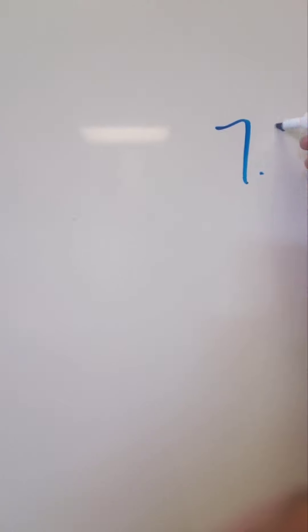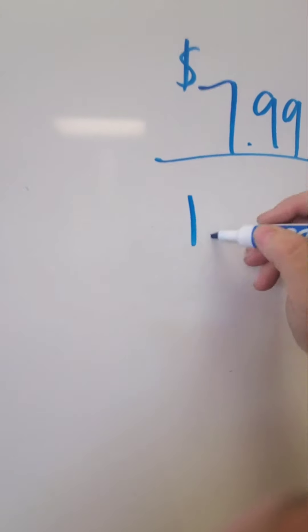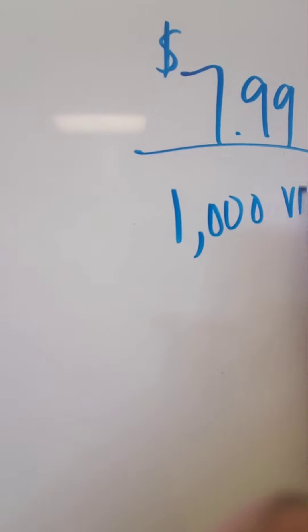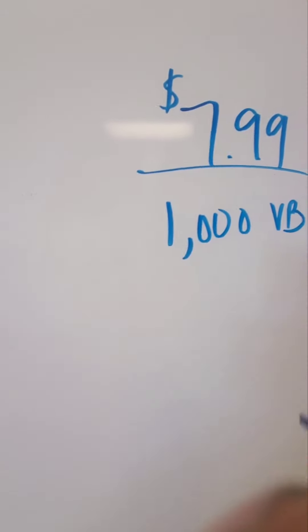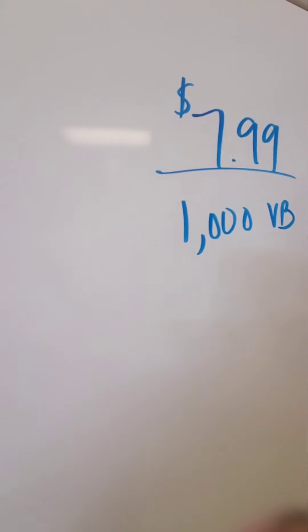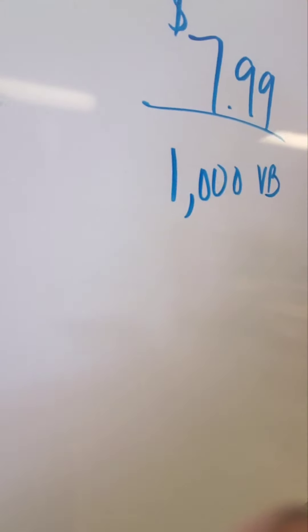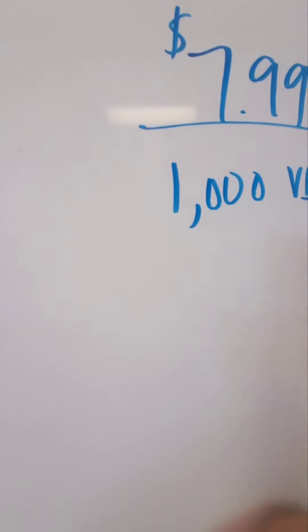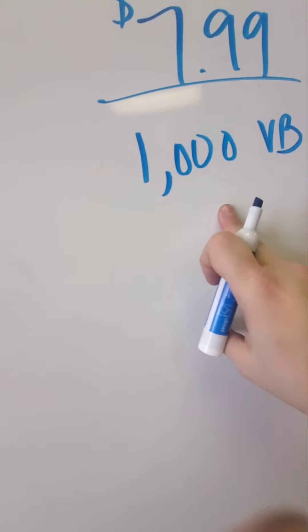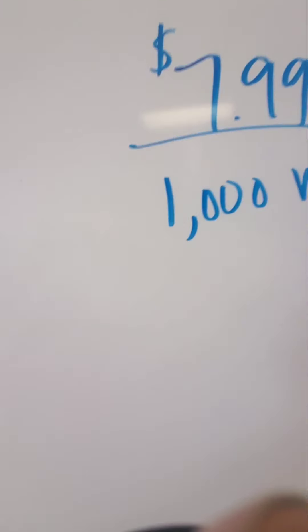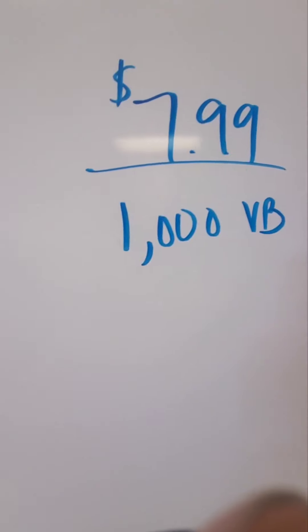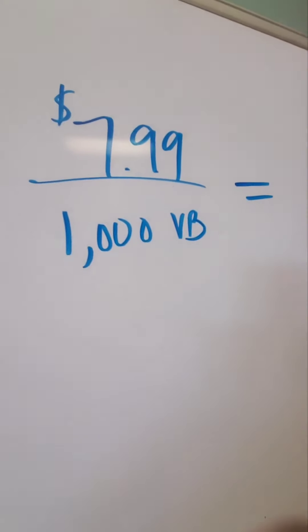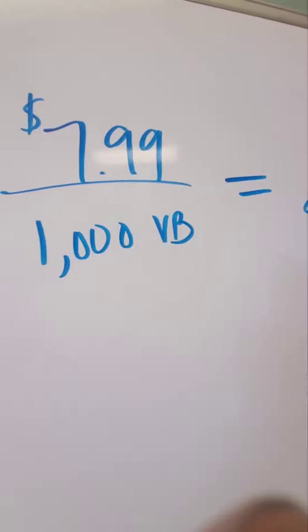So we're going to talk about V-Bucks. V-Bucks are $7.99 for 1,000 V-Bucks. You want dollars to be on top. It's easier to divide money into decimals because money is already a decimal — it's difficult if you had 1,000 and a half V-Bucks or 1,270.25. It's easier to divide money. So you want to put money on top. And I want to know how much it would be if I only got 500 V-Bucks.